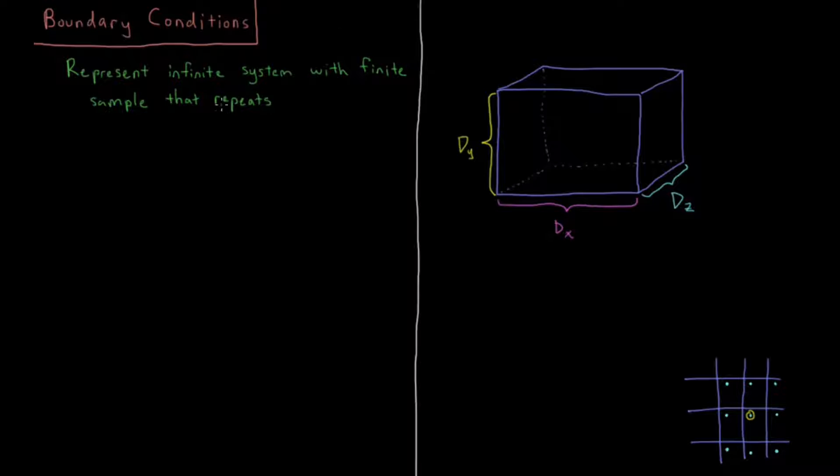So how do we do that? We do that with what's called boundary conditions. Our system is going to be effectively inside of a box. You can make it other shapes besides just a rectilinear prism, but it's simplest to do a rectilinear prism and that's what's done most often.